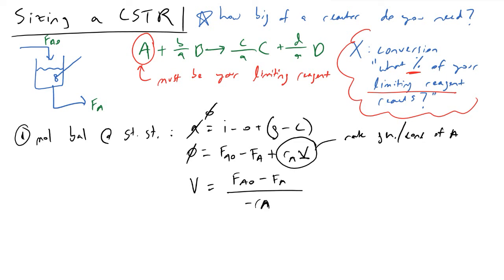Now that we're at this point, what we're going to make a note of here is that if we wanted to calculate or translate FA in terms of FA0 and conversion, what I mean by that is what we can say is FA is equivalent to 1 minus x times FA0.